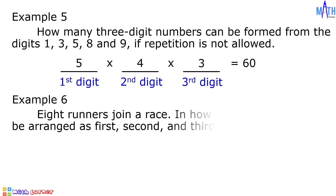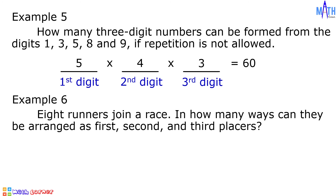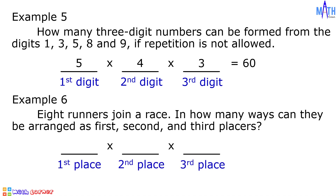Example number six: eight runners join a race. In how many ways can they be arranged as first, second, and third placers? There are three independent events — first place, second place, and third place. For first place, there are eight choices; seven for second place; and six for third place. Eight times seven times six is equal to 336. There are 336 ways.